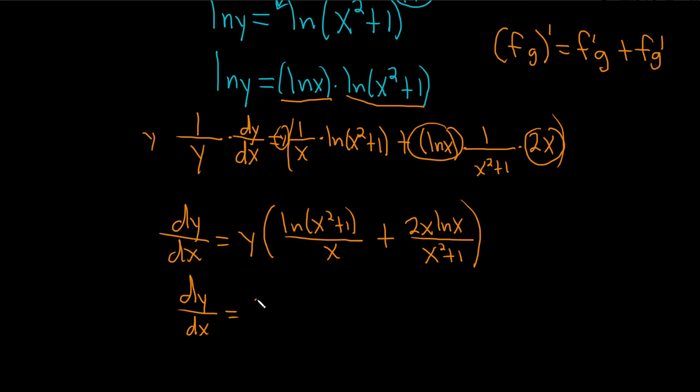so it'll be x squared plus 1 to the natural log of x, and then parenthesis ln of x squared plus 1 over x, pretty cool problem, plus 2x ln x over x squared plus 1. And that'll be the final answer.